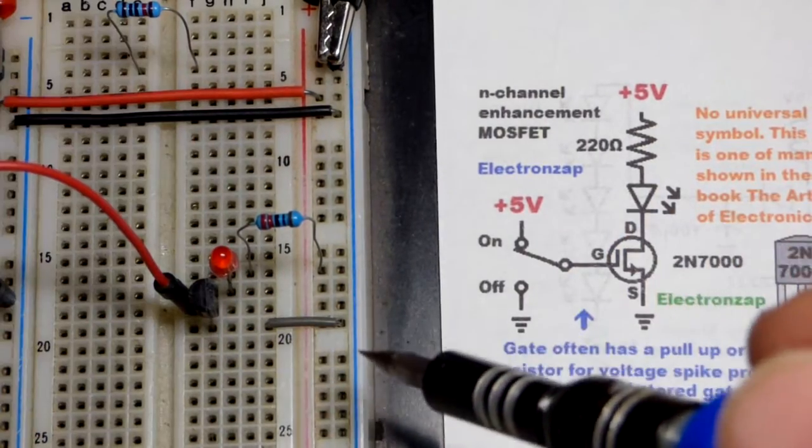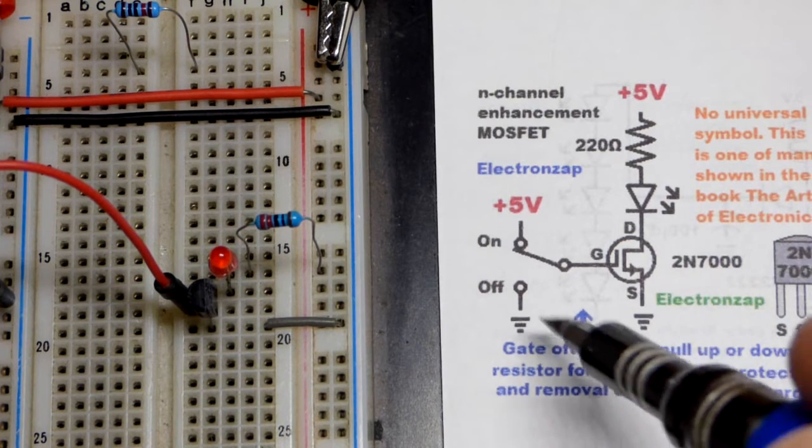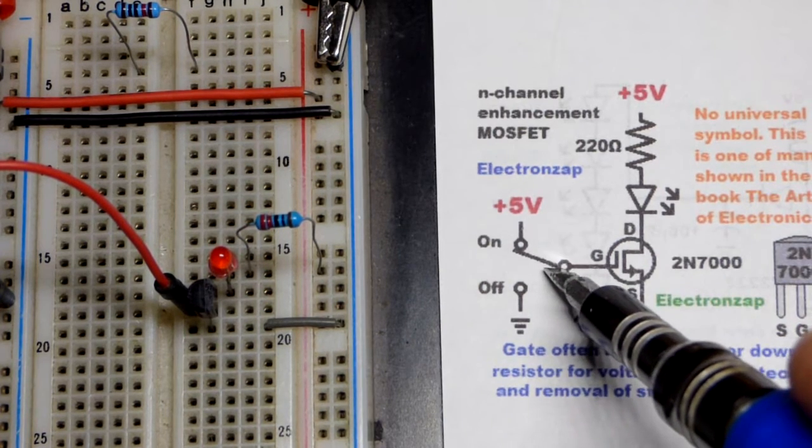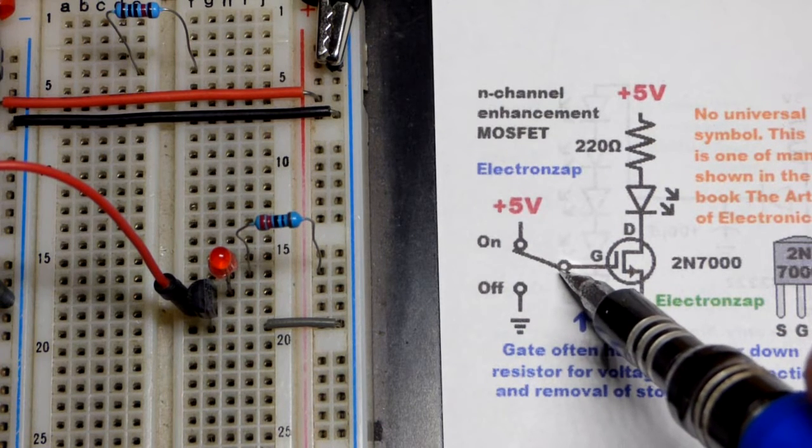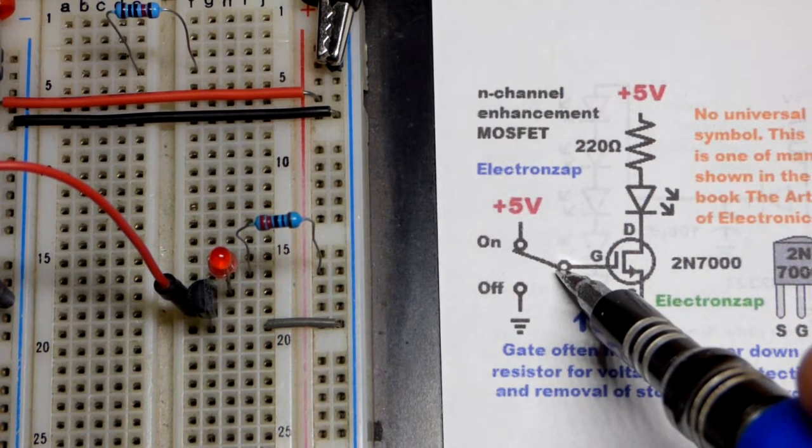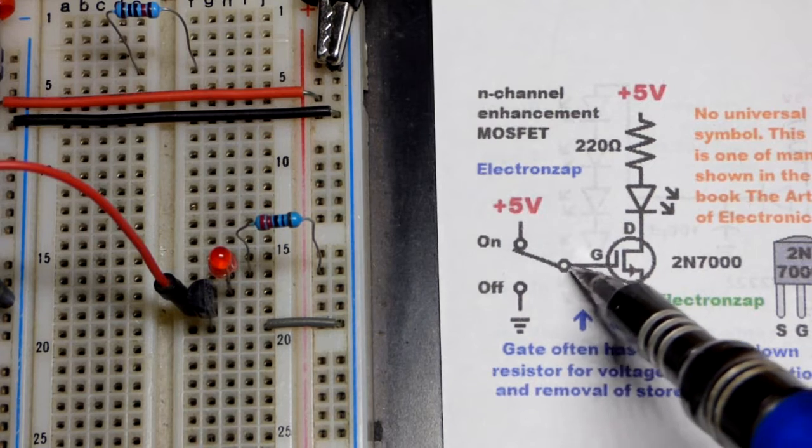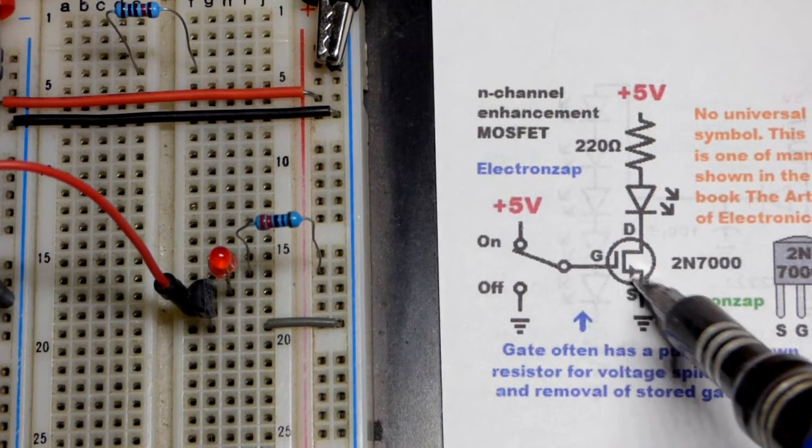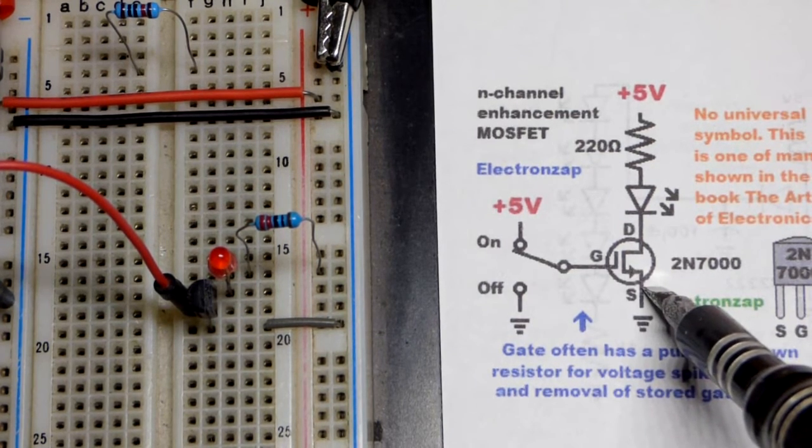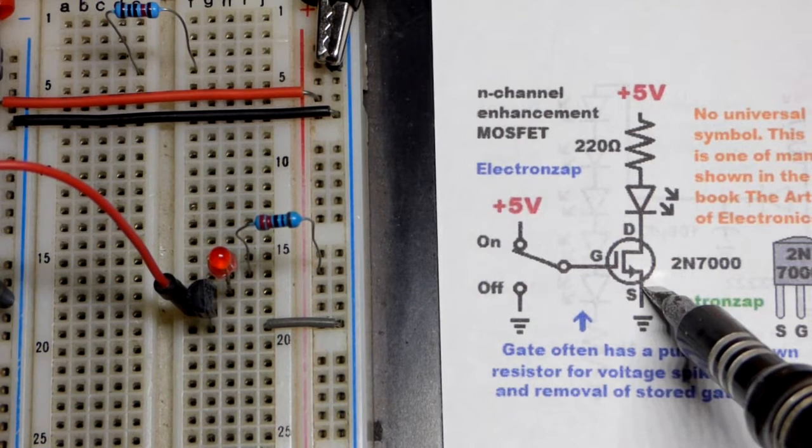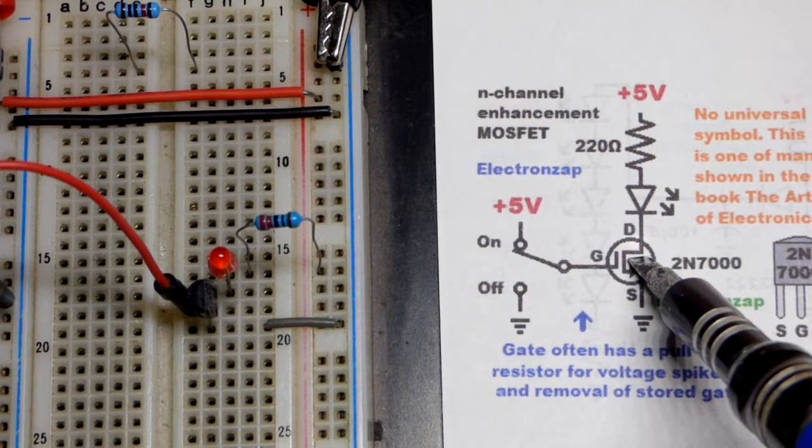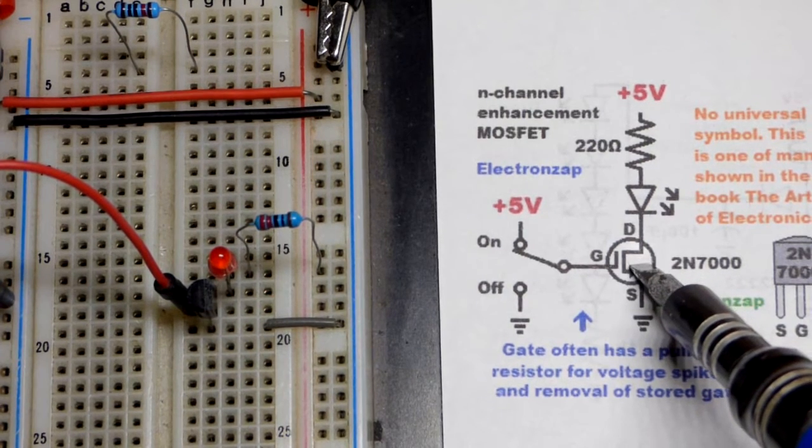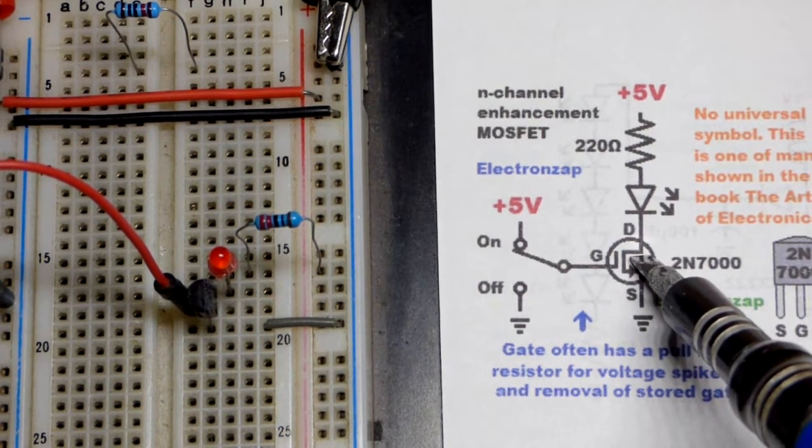Now unlike bipolar junction transistors, and generally you learn bipolar junction transistors first, so I just keep mentioning that. But the bipolar junction transistor has a resistor to the base, the control pin. This component does not depend on current like the bipolar junction transistor does. It basically just looks at the voltage at the gate.